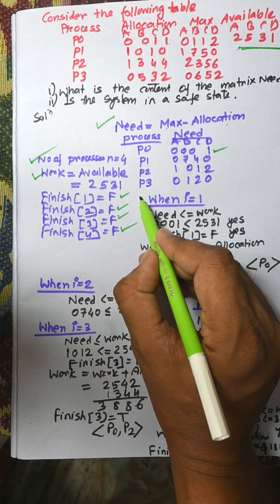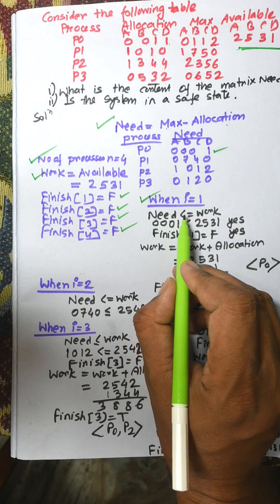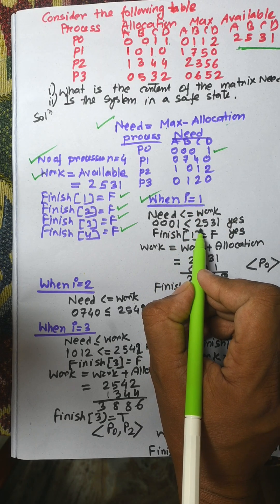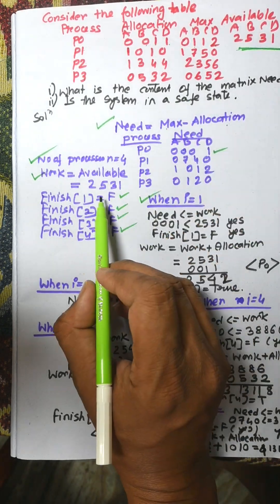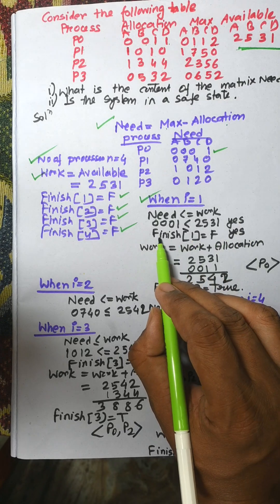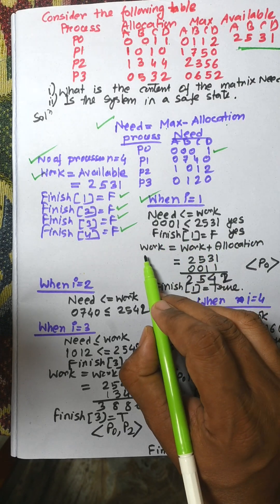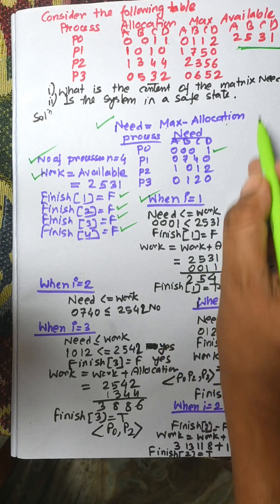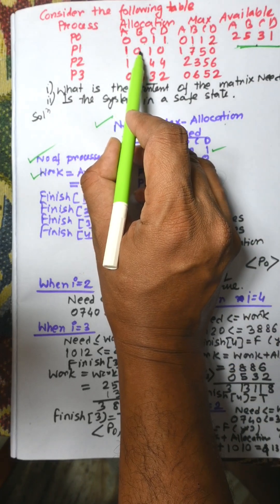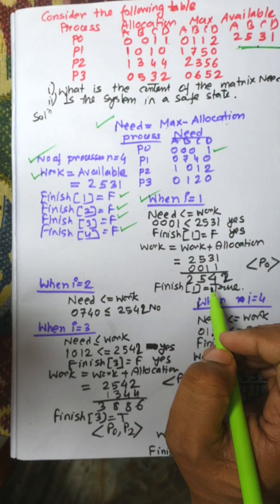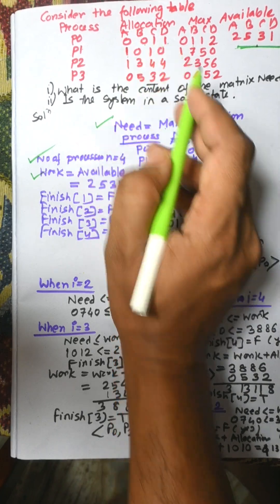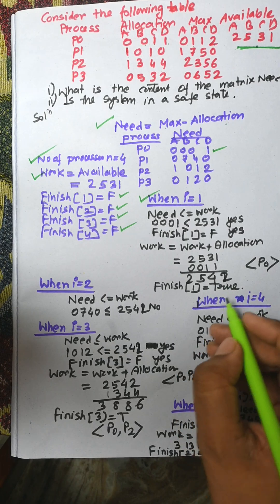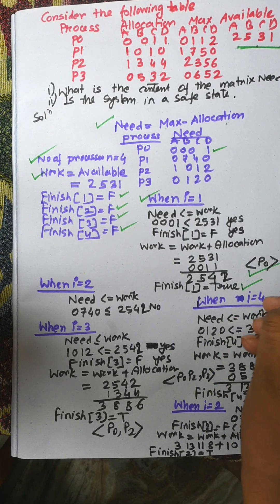When i = 1 (P0), we check if Need ≤ Work. Need is 0, 0, 0, 1, and Work is 2, 5, 3, 1 — yes, true. Finish[0] is false, so we proceed. Work is updated to Work plus Allocation: 2, 5, 3, 1 plus 1, 0, 1, 0, giving new Work = 2, 5, 4, 2. Finish[0] is now set to true.